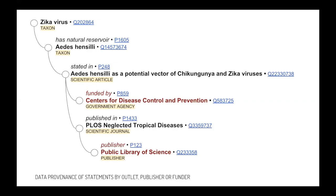Here's an example of how we can represent in Wikidata the fact that the Zika virus, identified by that Q number up there, has as its natural reservoir a specific species of mosquito. This information is stated in a specific paper, and you'll see there's additional metadata for that paper stating who funded the research — in this case funded by the CDC — where it's been published, who the publisher is, and so on. This gives you an idea of the power the system has at large scale, allowing you to slice and dice when you want to know what is the institutional provenance of a very specific piece of research. A system like this with its APIs and SPARQL queries will allow you to answer these questions — something that today is fairly difficult to do outside the narrow domain of bibliographic metadata.